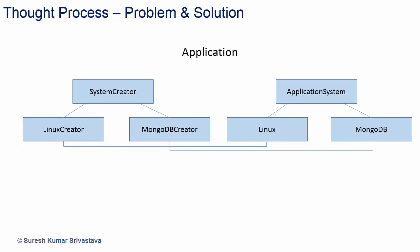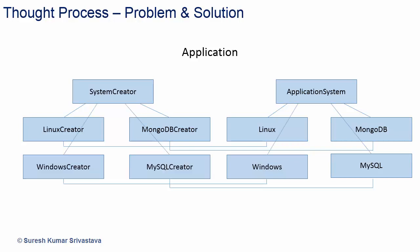Similarly, Linux and MongoDB will be provided by the application and inherited from application system. System creator will have a factory method. Linux creator will create the Linux system and MongoDB creator will create the MongoDB system. But in the future, more systems like Windows and MySQL have to be added, so many more subclasses will be introduced with a parallel class hierarchy.